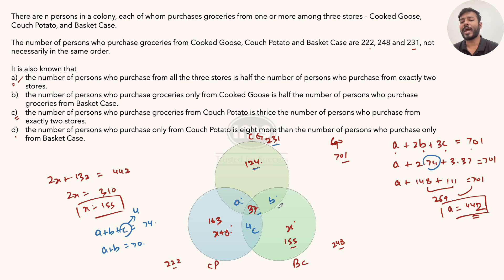Now we can figure out both A and B. 163 plus 37 plus 4 is 204. 204 and 222 difference is 18. So this would be 18. And finally B: A plus B together is 70, this is 18, so this would be 52. So all values are done.